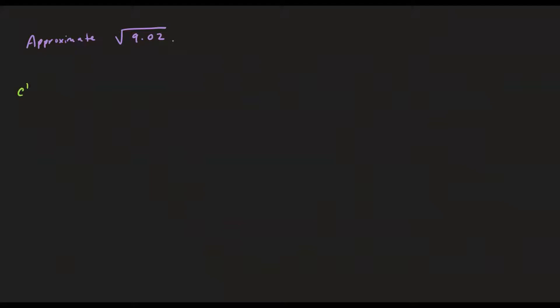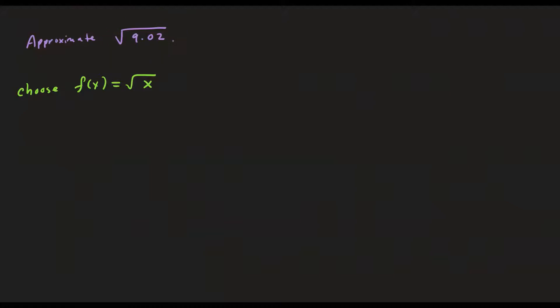Let's approximate the square root of 9.02. We're going to choose our function to be f of x equals square root of x, because that's what this looks like — you're approximating the square root of a number. I'm going to choose an x value, call it a, and that a should be close to 9.02 because I want to use the tangent line to get close to that number. So I'm going to pick a to be 9.